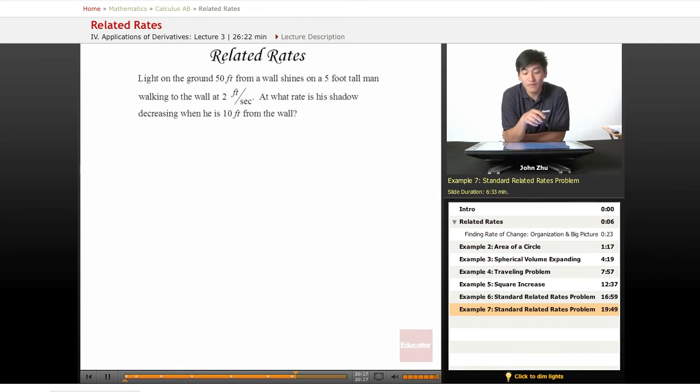Let's take a look at this problem. Light on the ground 50 feet from a wall shines on a five foot tall man walking to the wall at two feet per second. At what rate is his shadow decreasing when he is 10 feet from the wall?